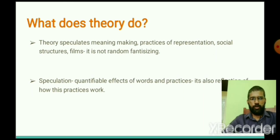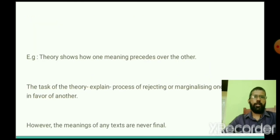So theory also tells us how one meaning of a particular text, of a poem, of a novel is accepted or gets accepted by the larger audience, and why another meaning does not get accepted. That particular process, mechanism of one meaning taking center and the other meanings falling at the margins is also explained by theory. So this is an example. Theory shows how one meaning proceeds over the other.